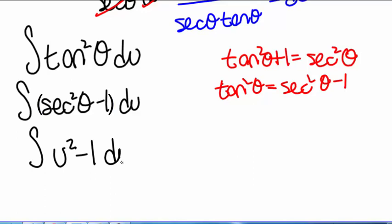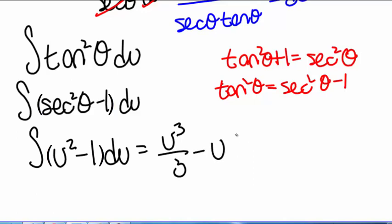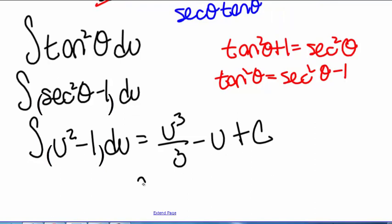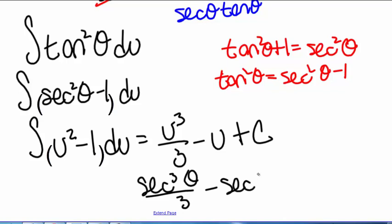We can take this integral: u cubed divided by 3 minus u plus a constant c. Plugging back in for u, we get secant cubed of theta divided by 3 minus secant of theta plus c.